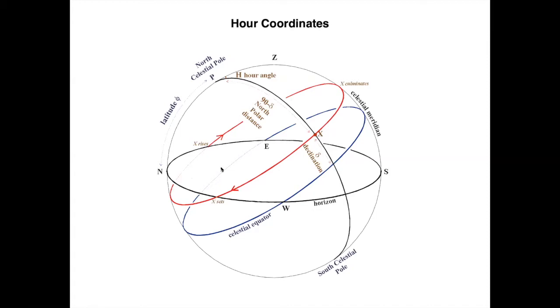The hour angle is measured from the meridian to the hour circle of the star. So you have the meridian in here, the star is in here, there's a point X. The hour angle is the angle that is going from the meridian where the star culminates to the current position of the star. So you see here that this coordinate system combines a universal coordinate which is declination with a local coordinate which is the hour angle.